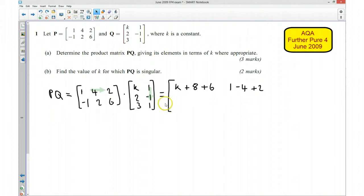Okay, this here is now going to be row 2, column 1. So I'm going to do row 2 times by column 1. So that's going to give me negative 1 times by k which is minus k, and then 2 times 2 which is going to be 4, and then 6 times 3 which is going to be 18.